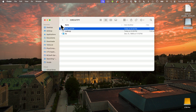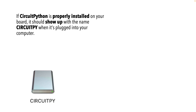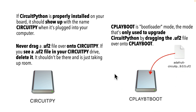Quick recap: we just upgraded our board to run the latest version of CircuitPython, and your board should mount on your computer with the name CircuitPy anytime you plug it in. The CplayBoot mode was only used to upgrade our board — that's when we dragged the UF2 file over to the board. Pro tip: you should never see a UF2 file inside your board when it's in CircuitPy mode. If you see a UF2 in there, just delete it — it's just taking up space.